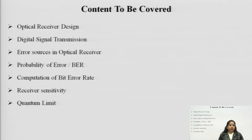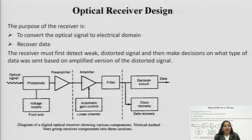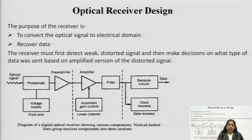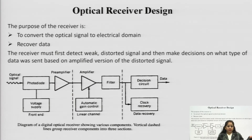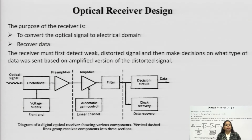Before proceeding, let us recall the basic components of an optical communication system. In any communication system, we require a transmitter, a transmitting medium, and a receiver. In optical communication, the transmitter comprises optical sources, the transmitting medium is the optical fiber, and then comes the optical receiver.